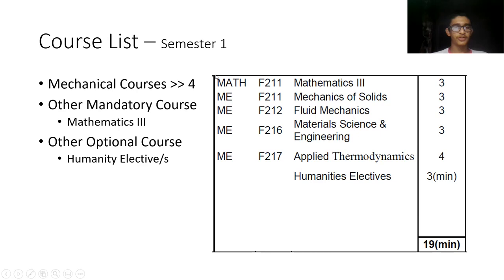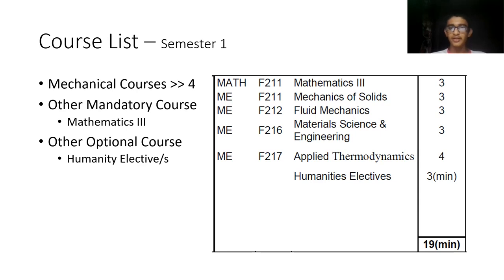The course list for the first semester: the most basic courses related to mechanical engineering are four — mechanics of solids, fluid mechanics, material science and engineering, and applied thermodynamics. The units or credits for those are also mentioned. Applied thermodynamics has a laboratory part, making it a heavy core structure, which is why it has four units.